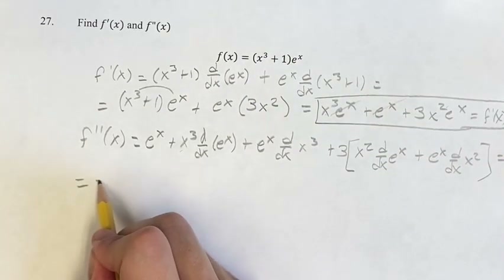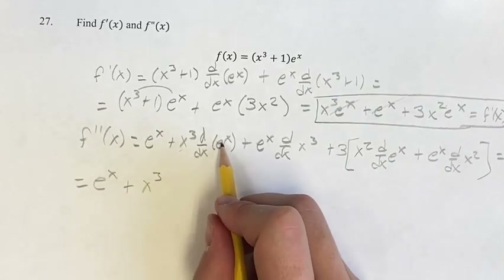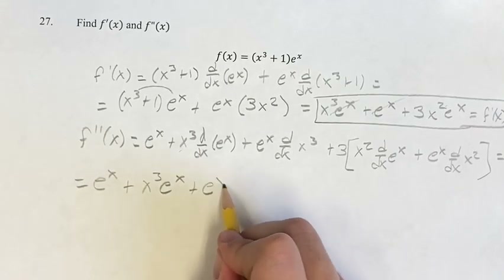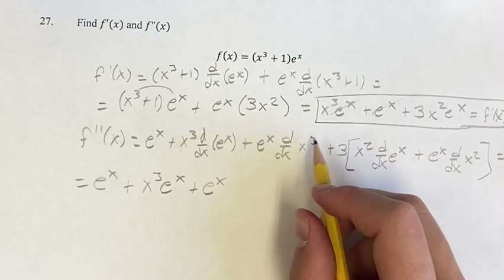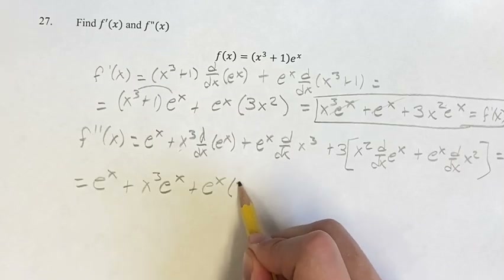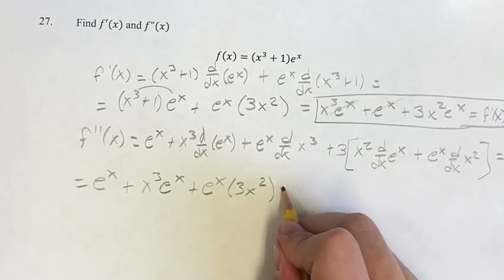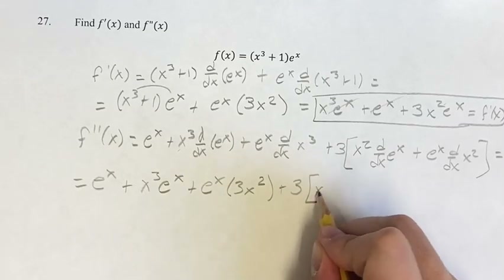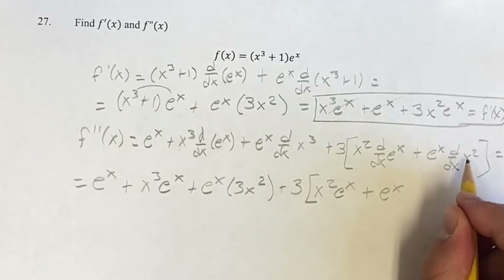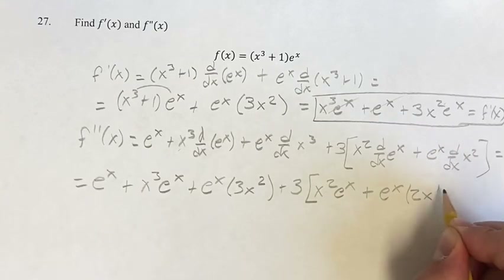Now we can simplify this. We get e to the x plus x cubed times the derivative of e to the x. The derivative of e to the x is e to the x, plus e to the x times the derivative of x cubed — a power function. We've actually already found it, but we can do it again: bring down the exponent, and your new exponent is going to be the old one minus 1. Plus 3 times x squared. The derivative of e to the x is e to the x, plus e to the x times the derivative of x squared — a power function — so bring down the exponent and subtract one for your new exponent.